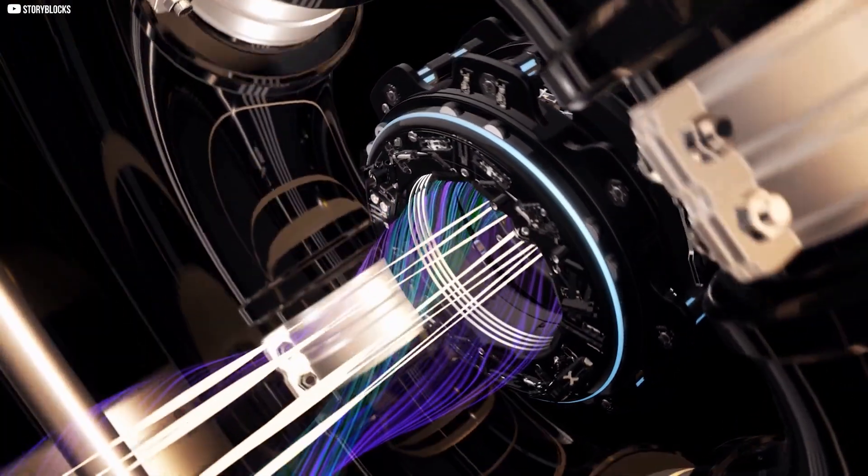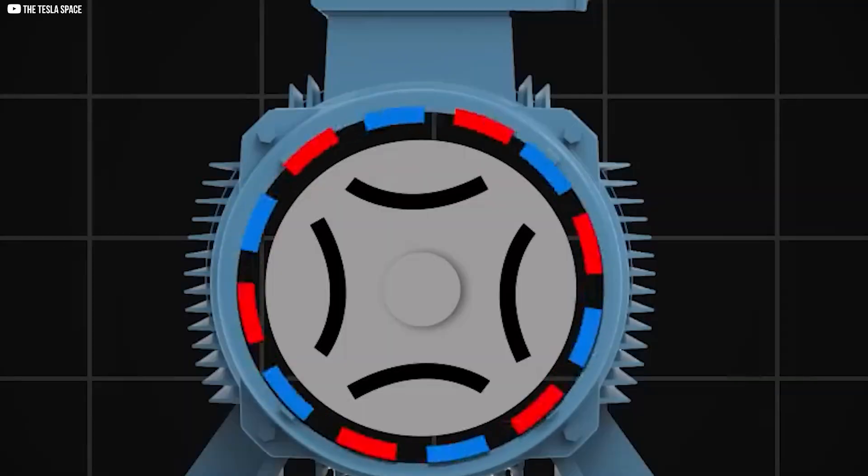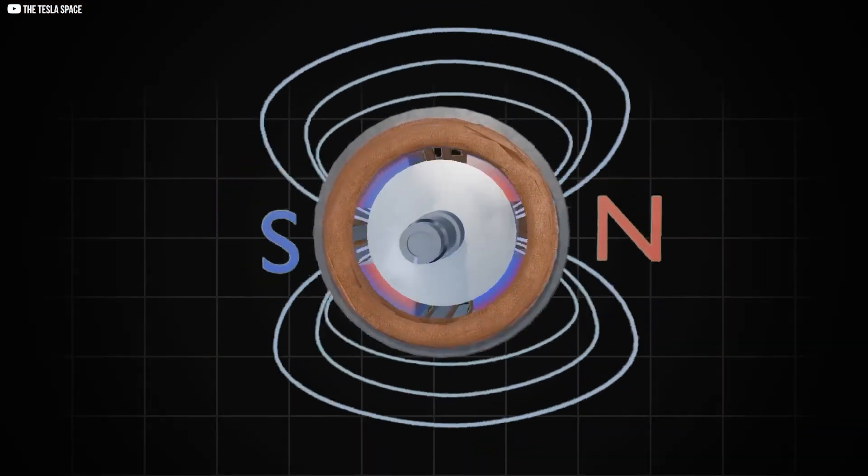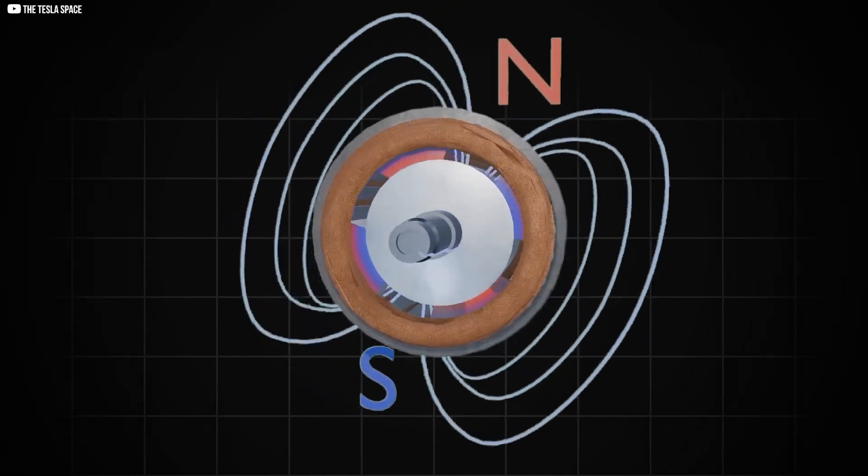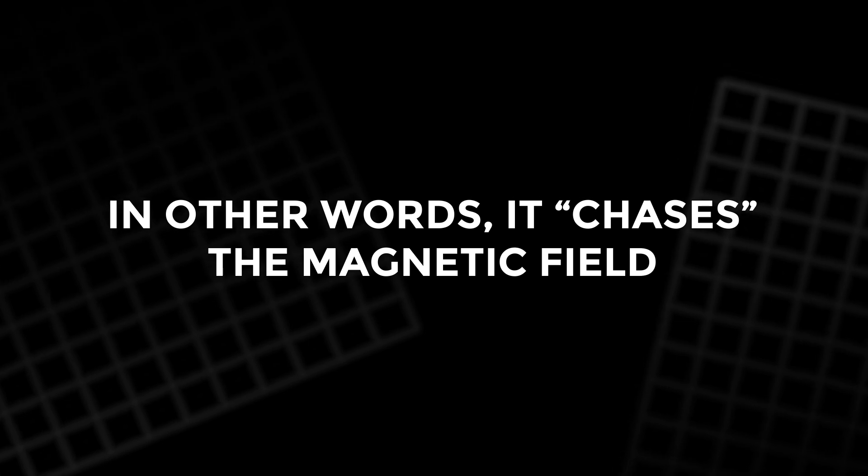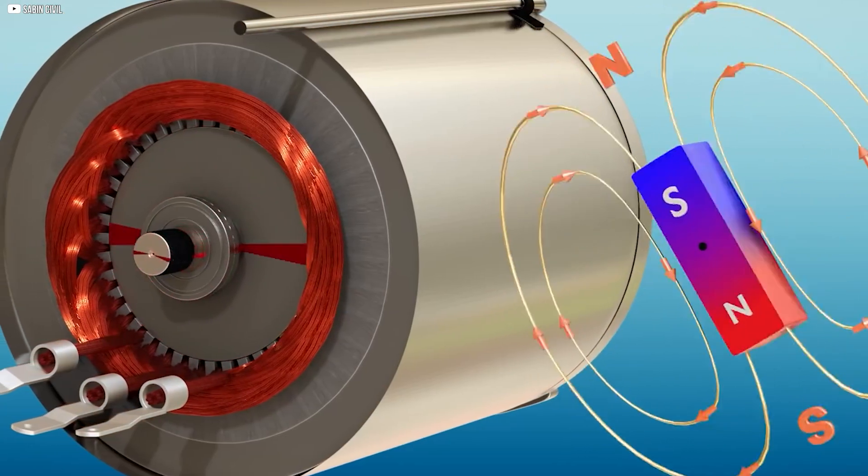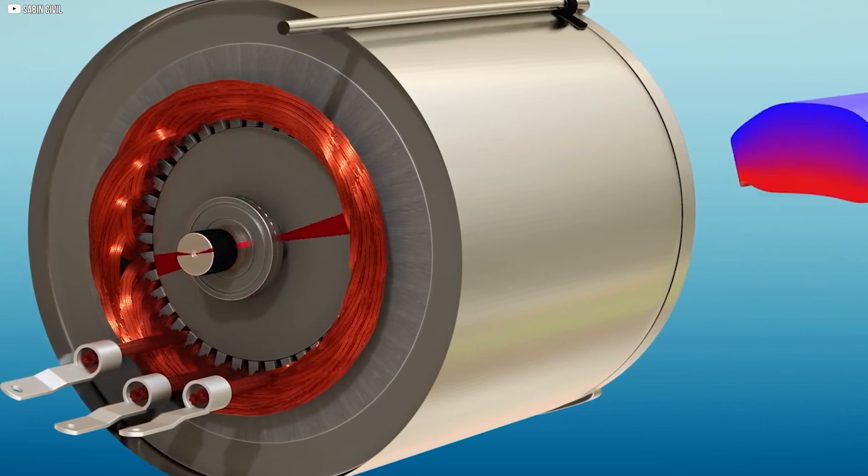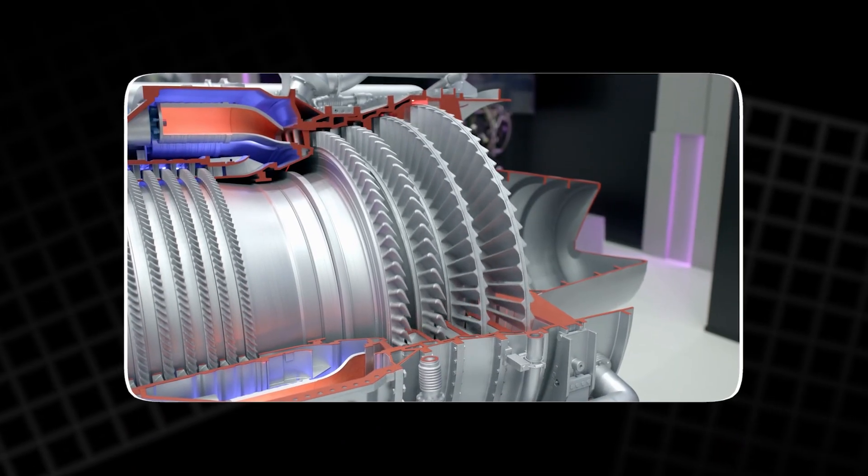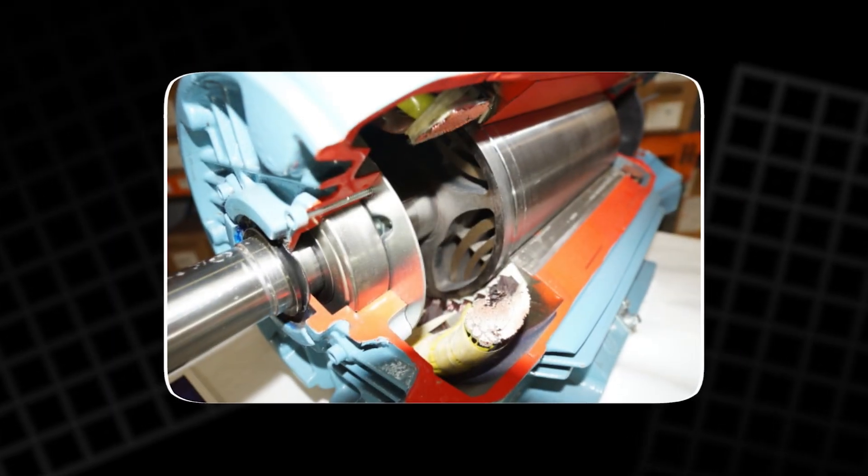Imagine a rotor made of iron with strategic cuts or slots. When the magnetic field rotates, the rotor naturally wants to line up with the magnetic field to minimize magnetic reluctance. In other words, it chases the magnetic field. This creates torque without relying on induced currents or permanent magnets. Motors based on this idea are called synchronous reluctance motors, or SYN-RMs.